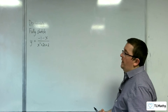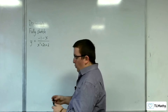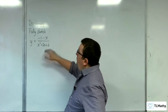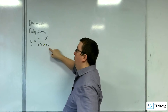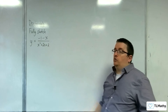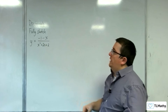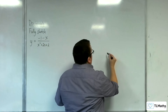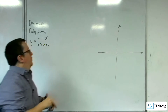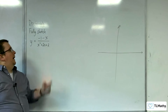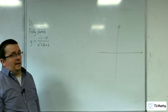First thing to do: can we factorise that denominator, x squared plus 2x plus 2? Well, the discriminant would be b squared, so 4 take away 4 lots of a times c, which would be negative. So it doesn't factorise — that denominator is going to be greater than 0 for all real values of x. Because the discriminant is negative, that means there are no vertical asymptotes.